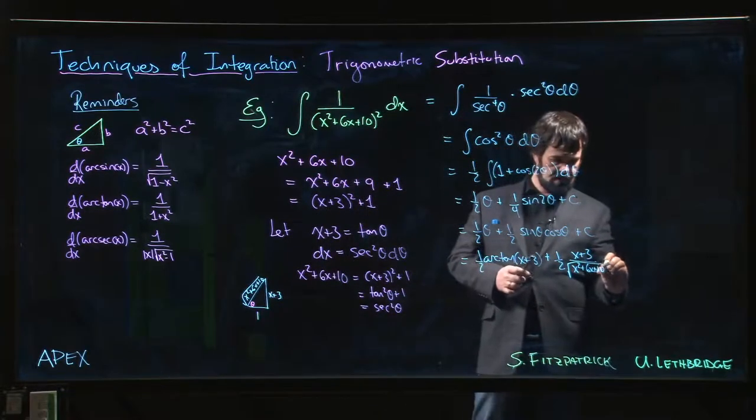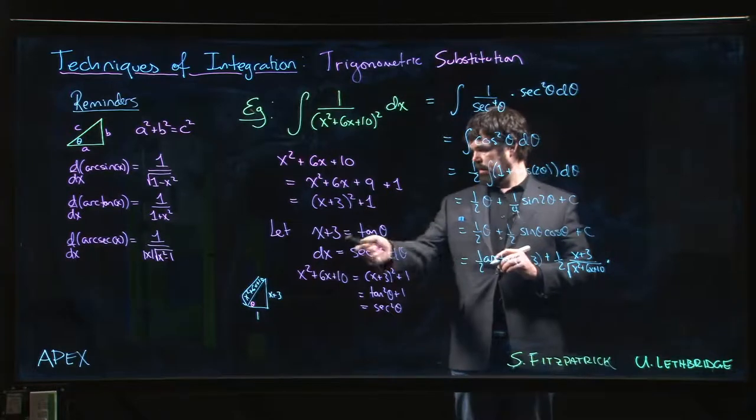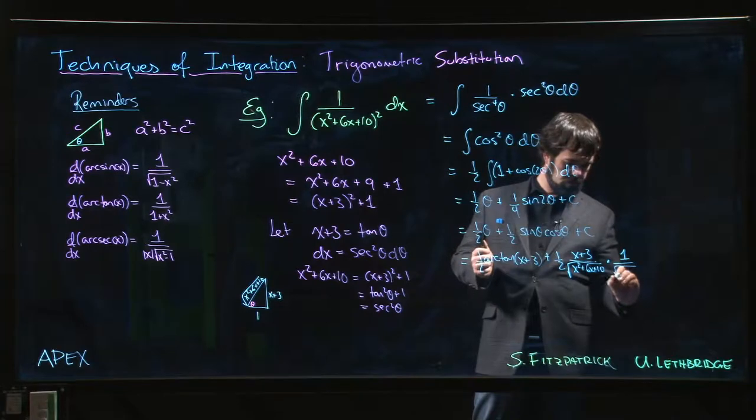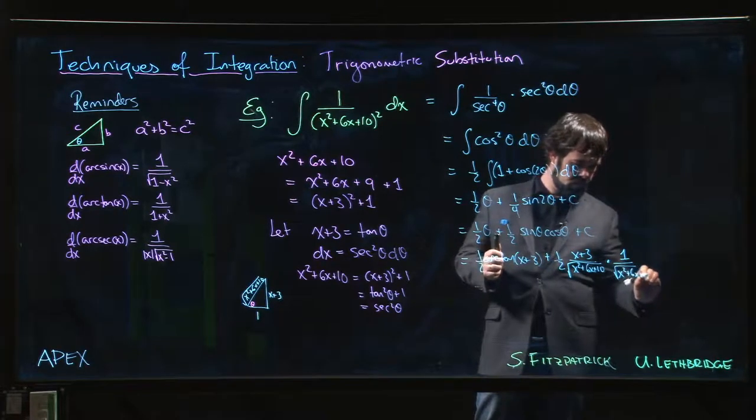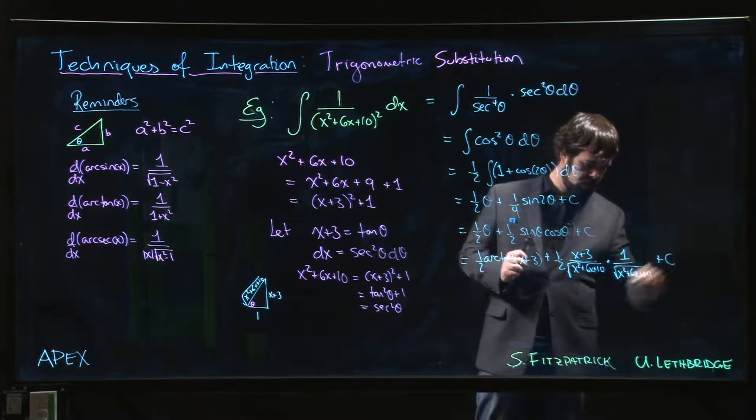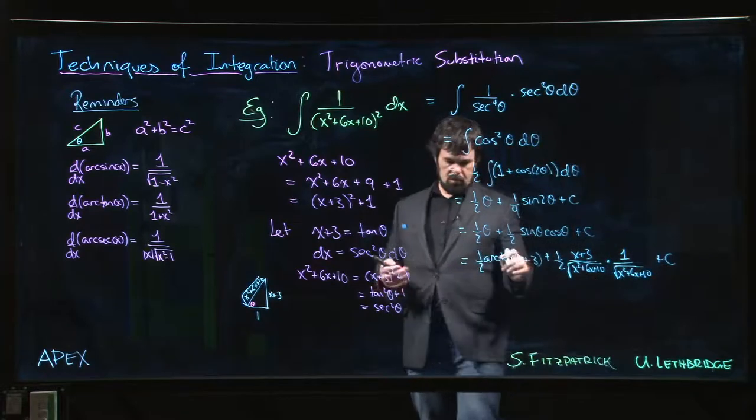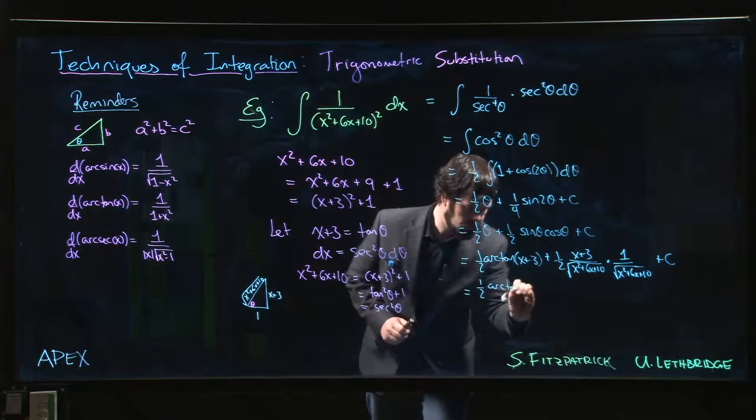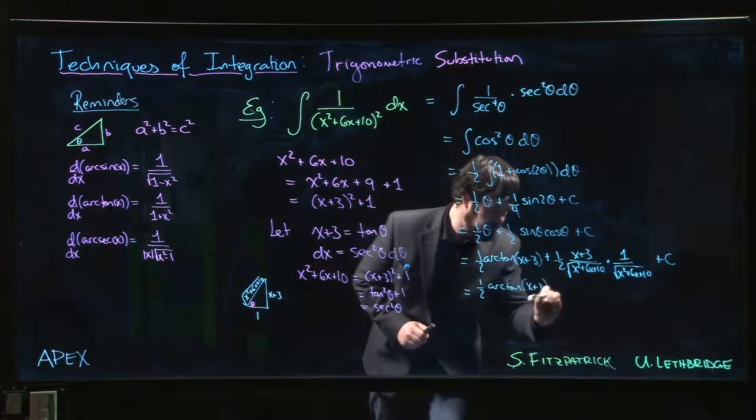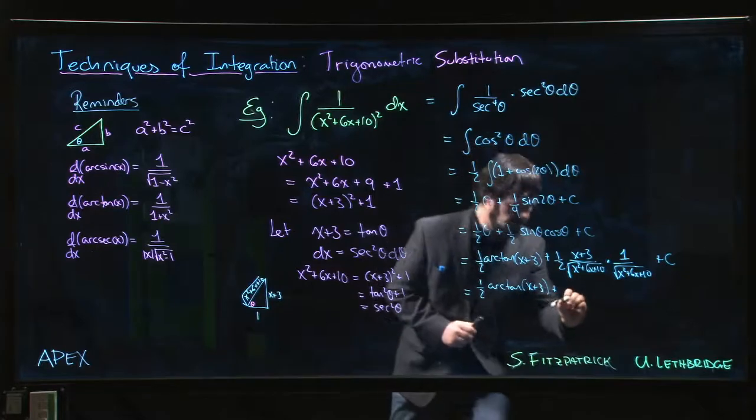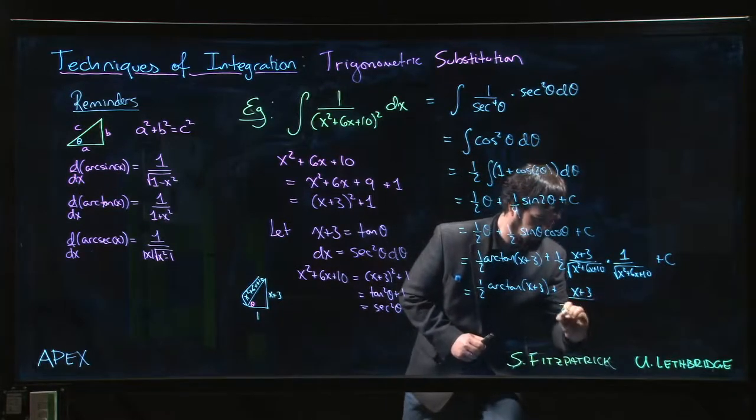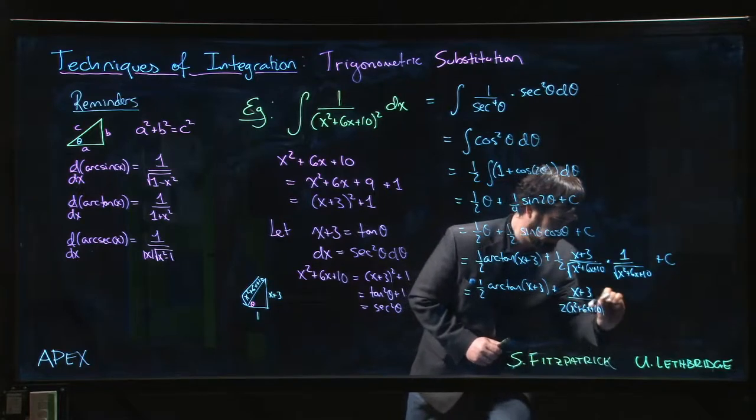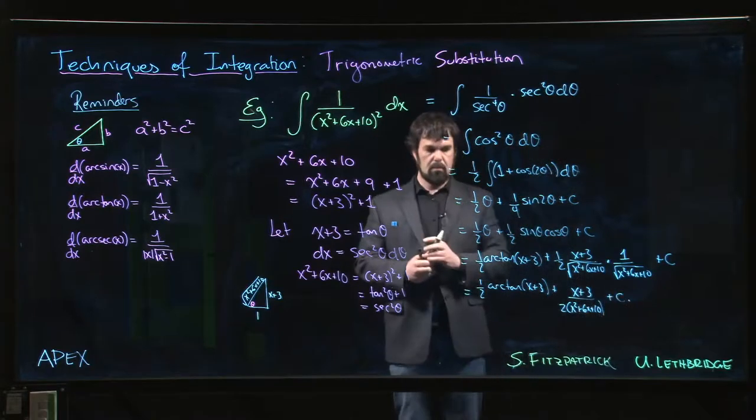It gets complicated, you have to keep track sometimes. And cos theta is going to be adjacent. Of course the square root is going to go away when we multiply those out. Leave it like that or if you want to clean it up just a little bit, we have x plus 3 over 2 times x squared plus 6x plus 10 plus our constant.